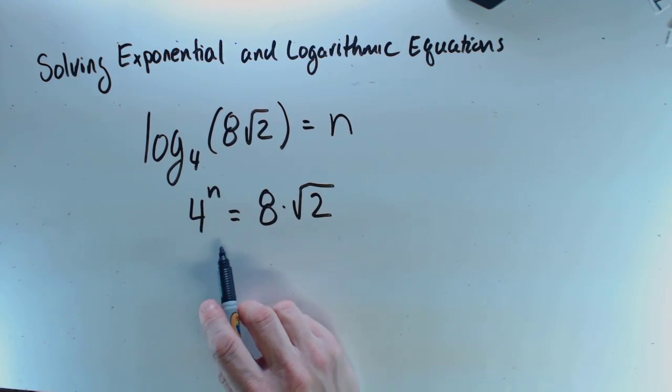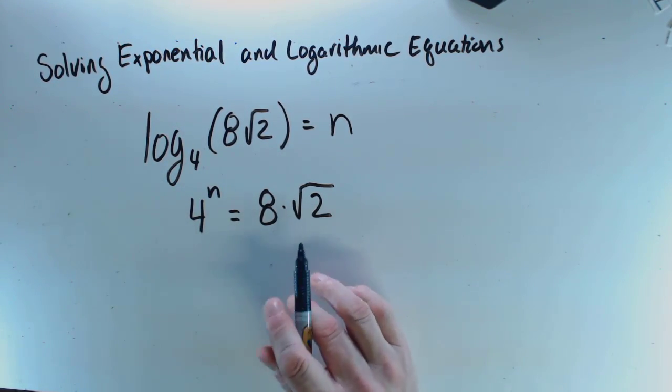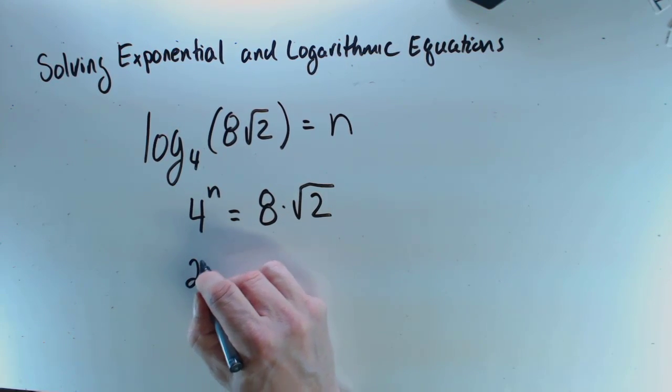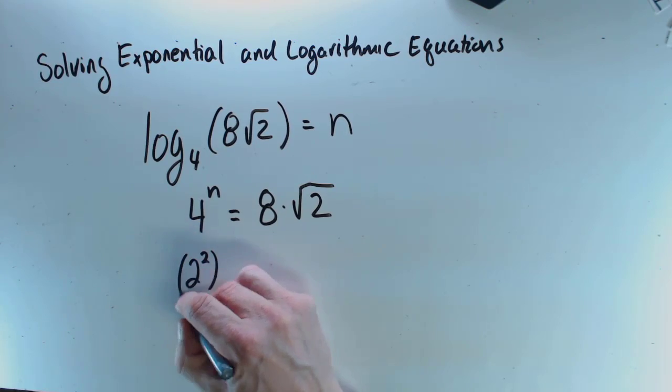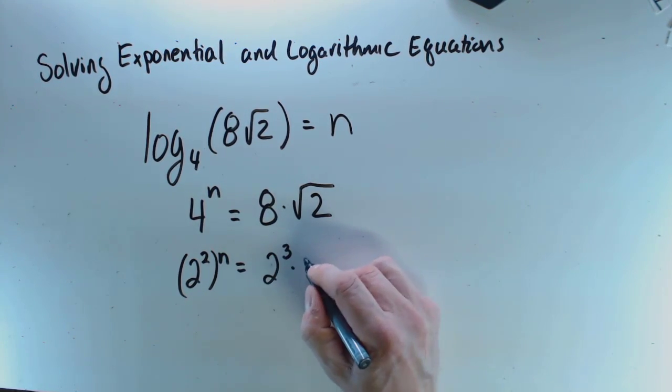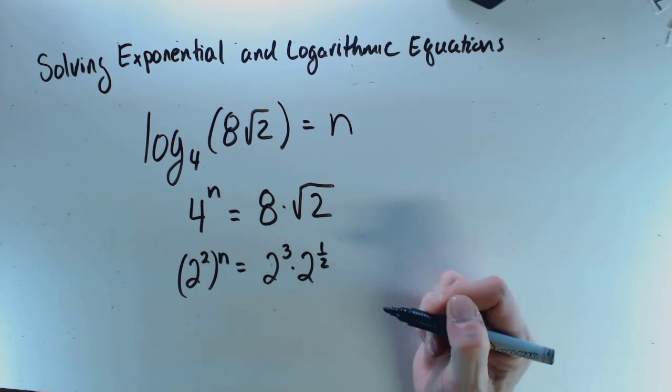Now I've got this thing where I want it. I can convert this all to base 2 just to make it easier. So this is 2 to the exponent 2 to the exponent n times 2 to the exponent 3 times 2 to the exponent 1 half.